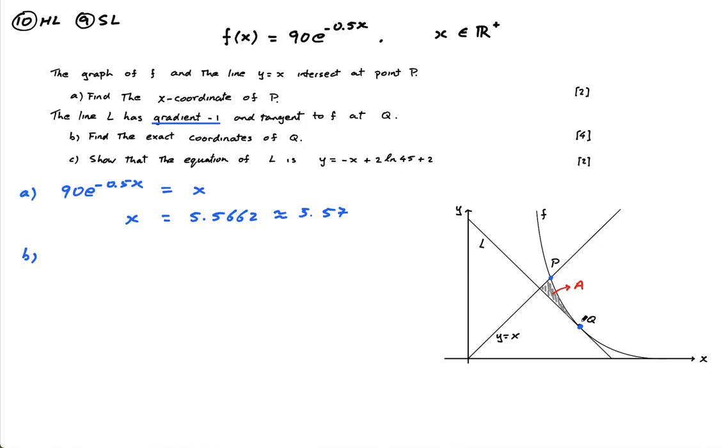Find the exact coordinates of Q. Okay, so the tangent means that it touches the curve exactly once. But more importantly, we say that the derivative of the function gives us the gradient of the tangent at that point.